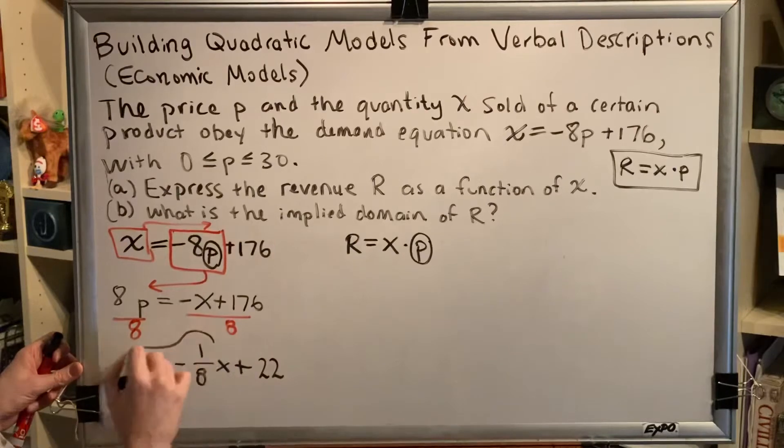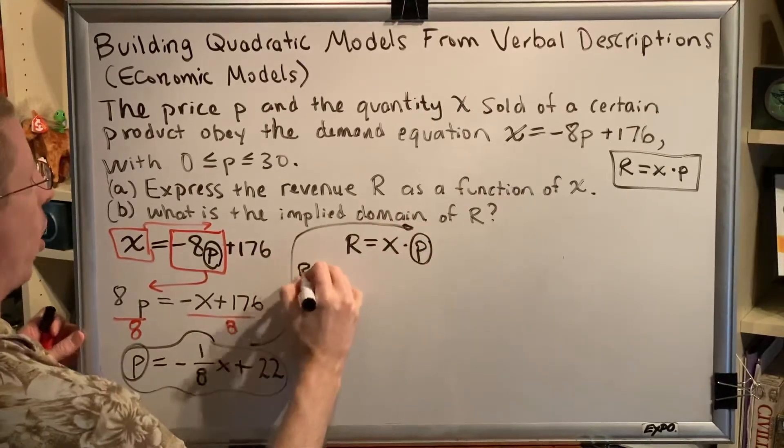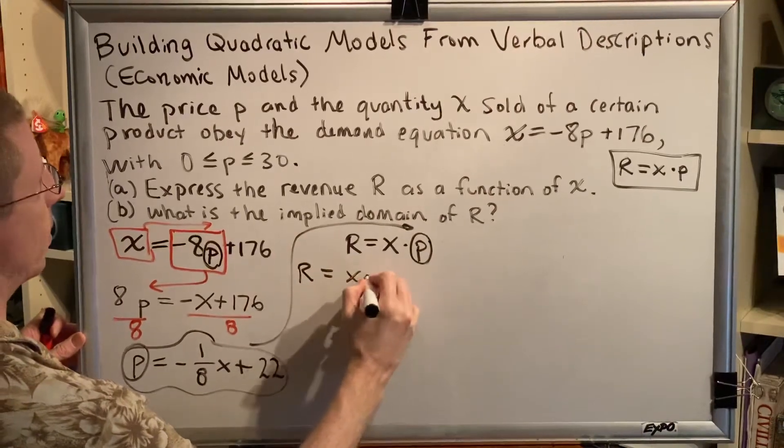Now that we know what p is equal to, we can plug this into our other equation. So we get R = x·p.